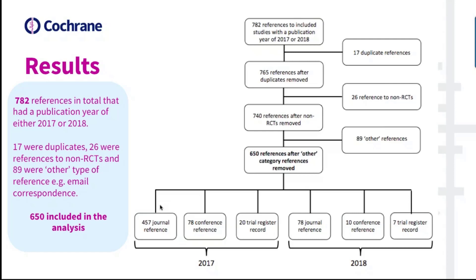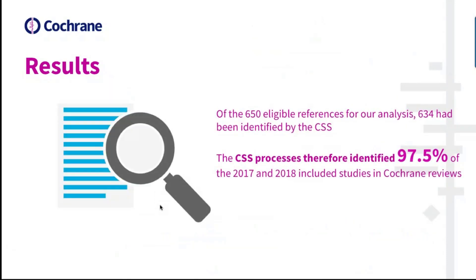The numbers for 2018 are much smaller than for 2017 because we downloaded the data in early April this year, and there will already be more reviews published containing included studies with a 2018 publication year. With our 650 references, we ran an audit trail for each one to identify if the CSS had found it and how. Of the 650 eligible references, 634 had been identified by the CSS — that is, 97.5% of the 2017–2018 references included in this analysis.